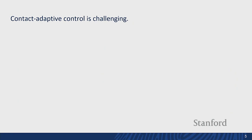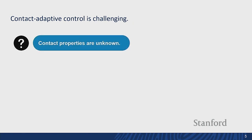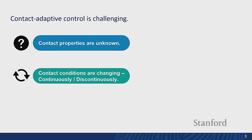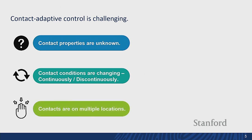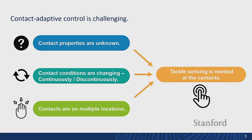Contact adaptive control is challenging because contact properties such as friction coefficients and the inertia of the object are often unknown. Contact conditions are changing continuously and discontinuously, and contacts can be made on multiple locations. Because of this uncertain and unpredictable nature of contact, we need tactile sensors to achieve contact adaptive control.